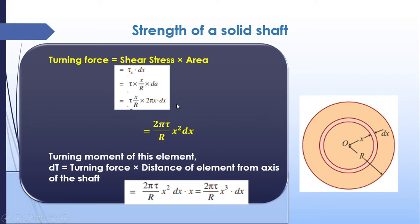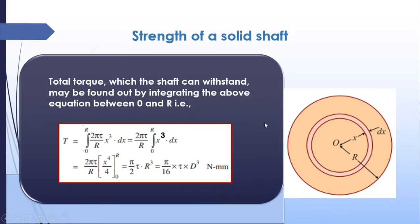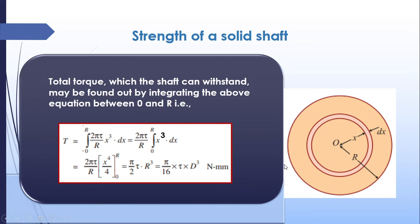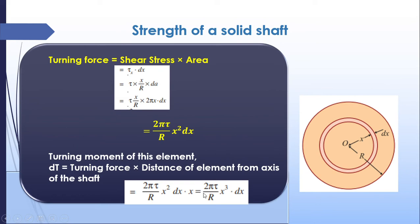The turning moment dT is force times distance: dT = 2·pi·tau / R · x³·dx. This is the turning moment at this section. To find the total torque, we integrate over the entire cross section from 0 to R.